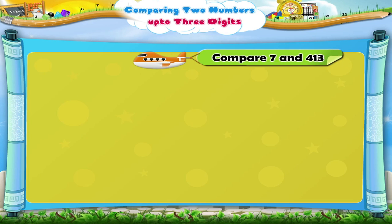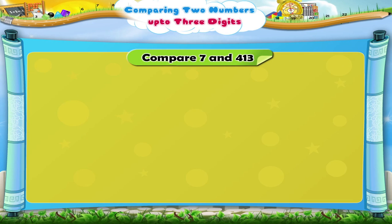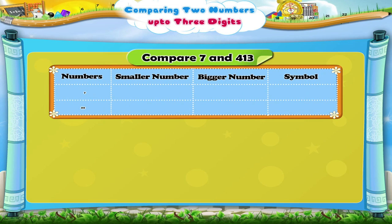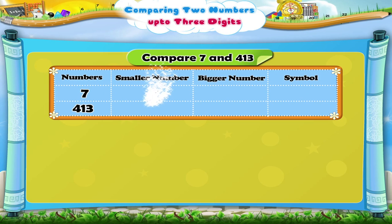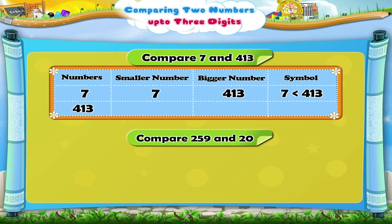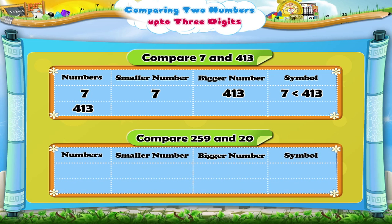Let us compare 7 and 413. The number 7 is smaller than 413. Now let us compare 259 and 20. The number 259 is bigger than 20, so we write it as 259 is bigger than 20.